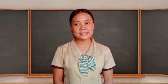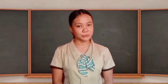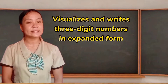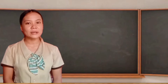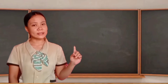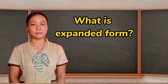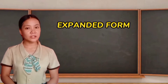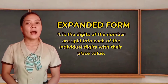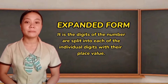That riddle, class, has something to do with our lesson for today. Because our lesson for today is: visualize and write three-digit numbers in expanded form. So let's start our lesson. Let's talk first — what is expanded form? Or when do we say that numbers are in expanded form? When we say expanded form, class, always remember that it is the digits of the number split into each of the individual digits with their place value.